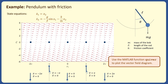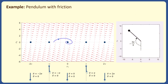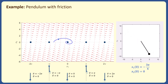Starting with an initial condition of x1(0) equals minus 3-pi over 4 and x2(0) equals 0, we can see from the trajectory plot that the states x1 and x2 tend to the origin as time goes to infinity.